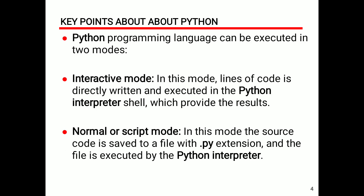Key points about Python: Python programming language can be executed in two modes — interactive mode and normal or script mode. In interactive mode, lines of code are directly written and executed in the Python interpreter shell, which provides the results. In normal or script mode, the source code is saved to a file with a .py extension and executed by the Python interpreter. In script mode, we save the program as a filename with .py extension and then run it through the Python interpreter. In interactive mode, we execute lines of code directly without saving files.